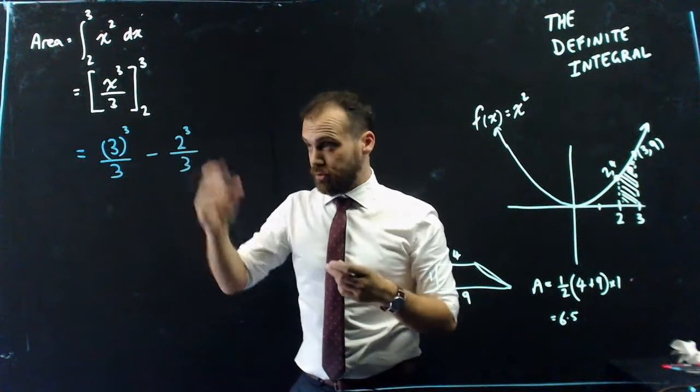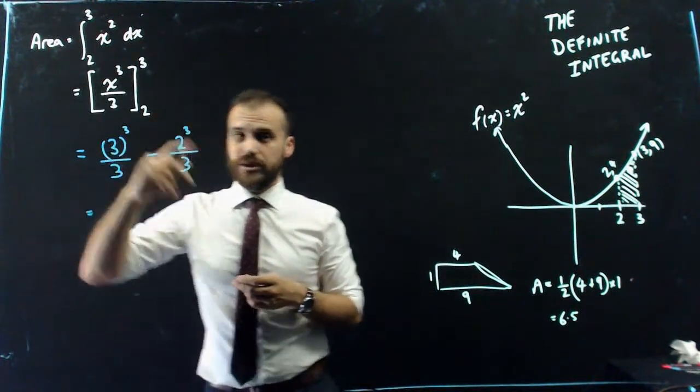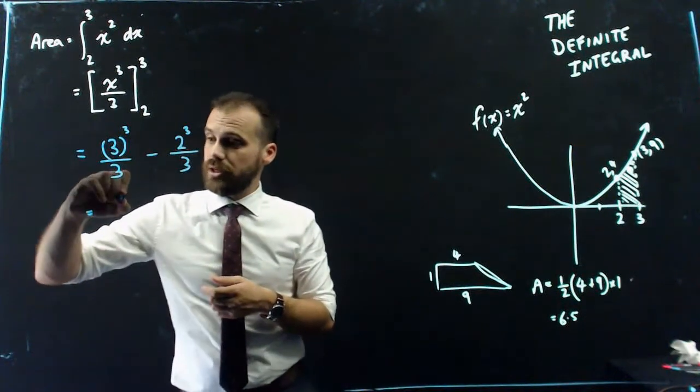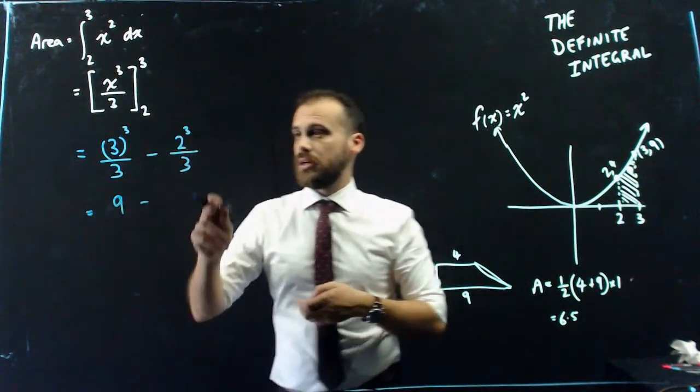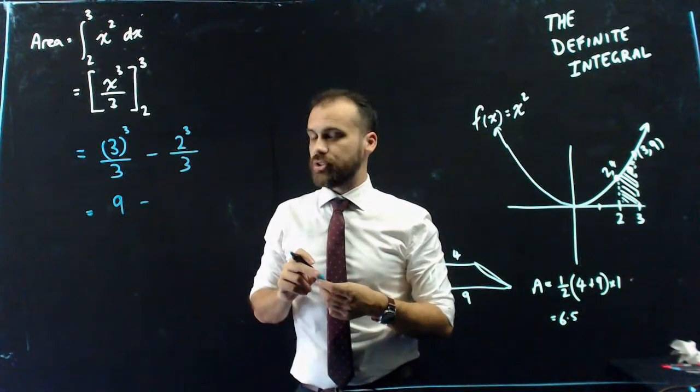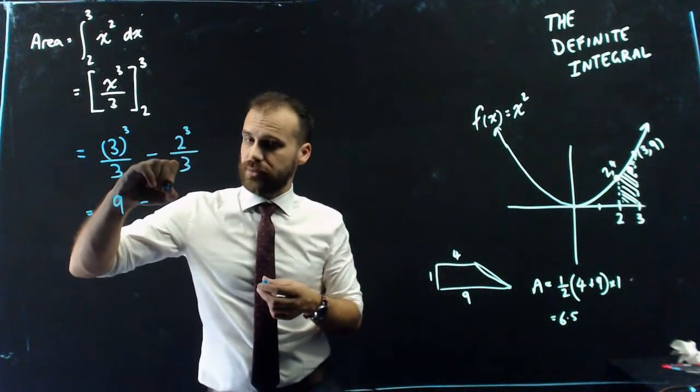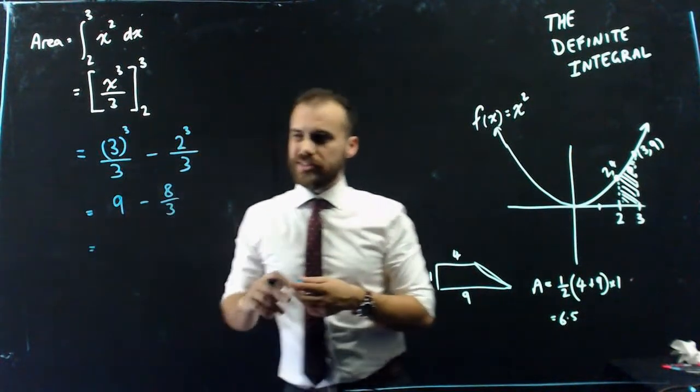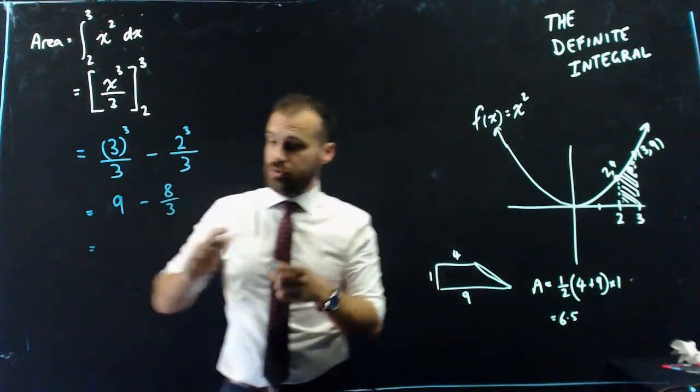Now, if I calculate this, 3 cubed is 27. 27 divided by 3 is 9. Minus 8 over 3. That's going to be 6 and 1 third.